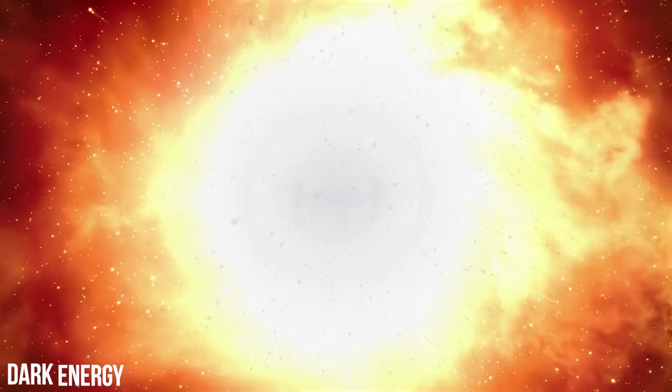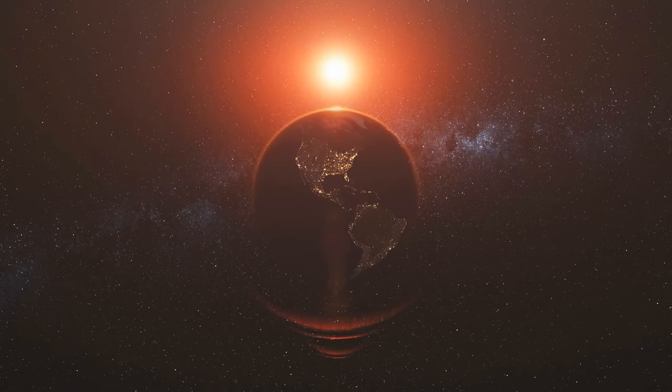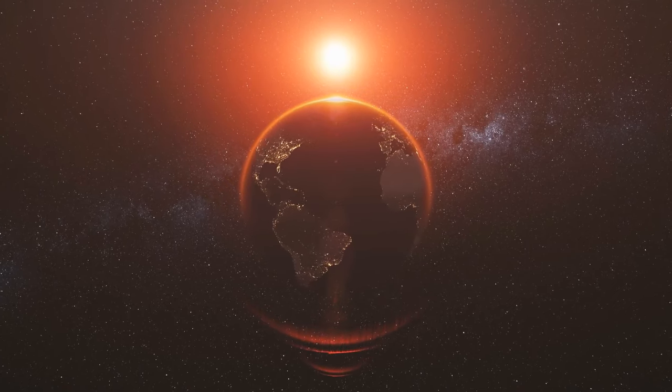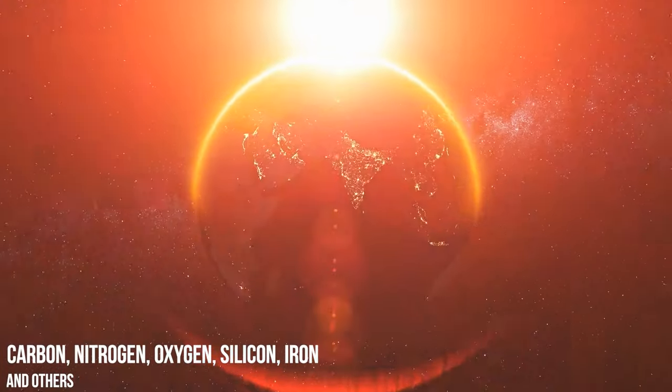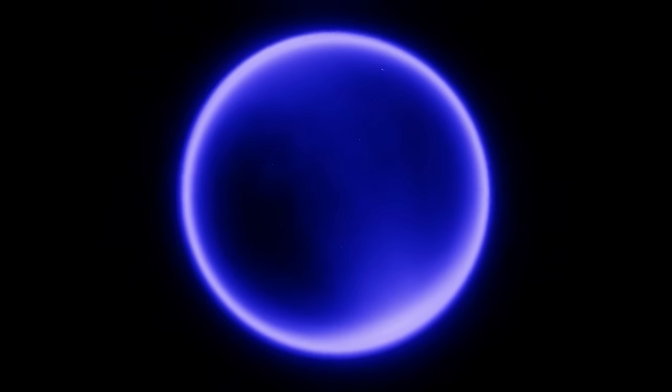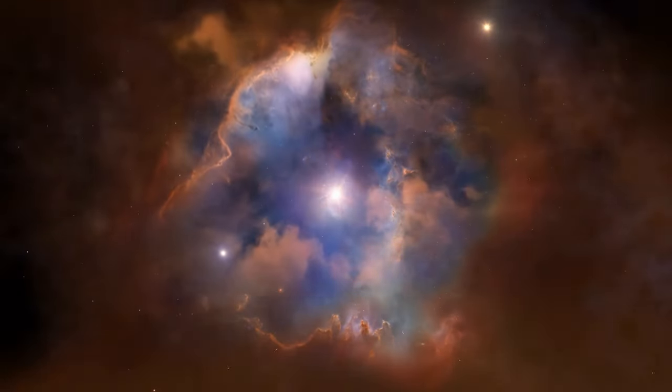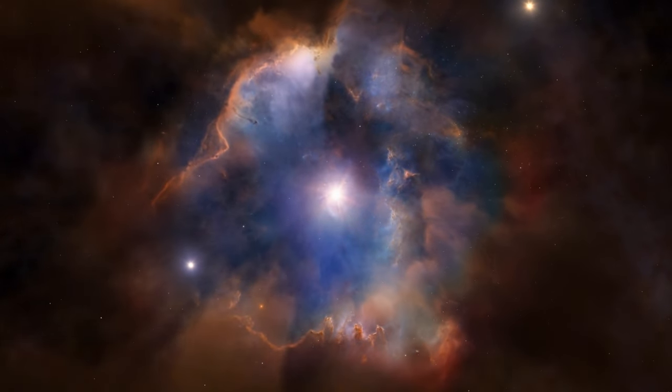The universe is primarily composed of hydrogen and helium, with these two elements making up 98% of the visible matter. However, life on Earth and the planet itself owe their existence to heavier elements like carbon, nitrogen, oxygen, silicon, iron, and others. Understanding how the universe evolved from its simple state after the Big Bang to the complex cosmos we see now involves understanding the formation of stars, galaxies, and planets.